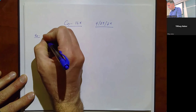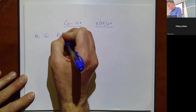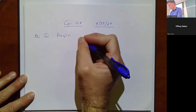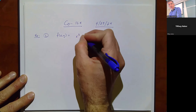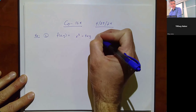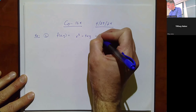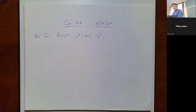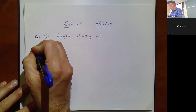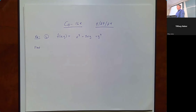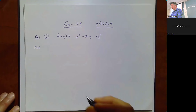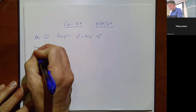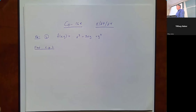Let's say we have f(x, y) equal to x³ - 3xy + y². Whenever we're doing this, we're always going to start by finding the critical values — or really critical points, because it's not just a value, it's an (x, y) pair. To find the critical points, we're going to take the partial derivatives and set them equal to zero.